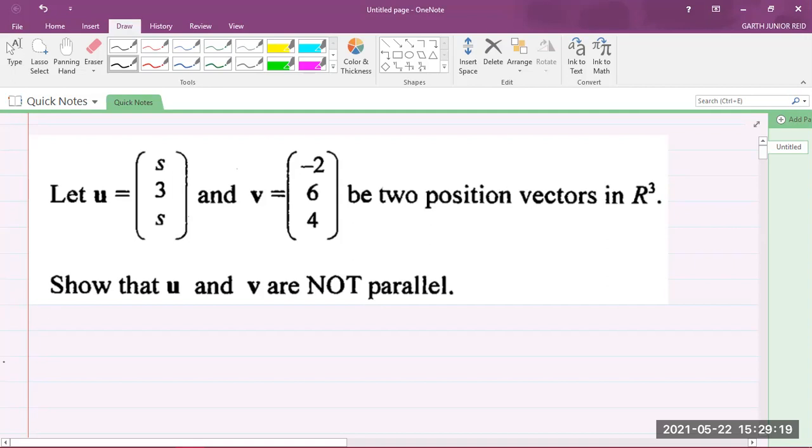What do you know about parallel vectors? If the vector U and the vector V are parallel, then we can write one as a scalar multiple of the other. So I could write the vector U is equal to a constant lambda multiplied by the vector V, or I could say the vector V is equal to a constant lambda multiplied by the vector U, where lambda is a real number.